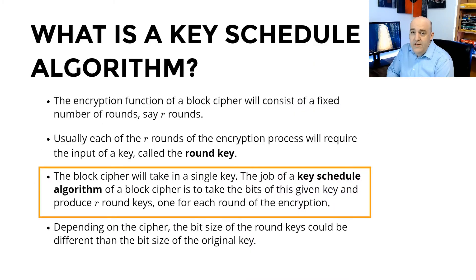What is a Key Schedule algorithm just in general? For any block cipher, usually the encryption process consists of a number of rounds, say r rounds. And usually each round of that encryption requires a round key. The block cipher generally will take in a single key, and the job of the Key Schedule algorithm is to take that single key and produce r keys from it, one for each round of the encryption.